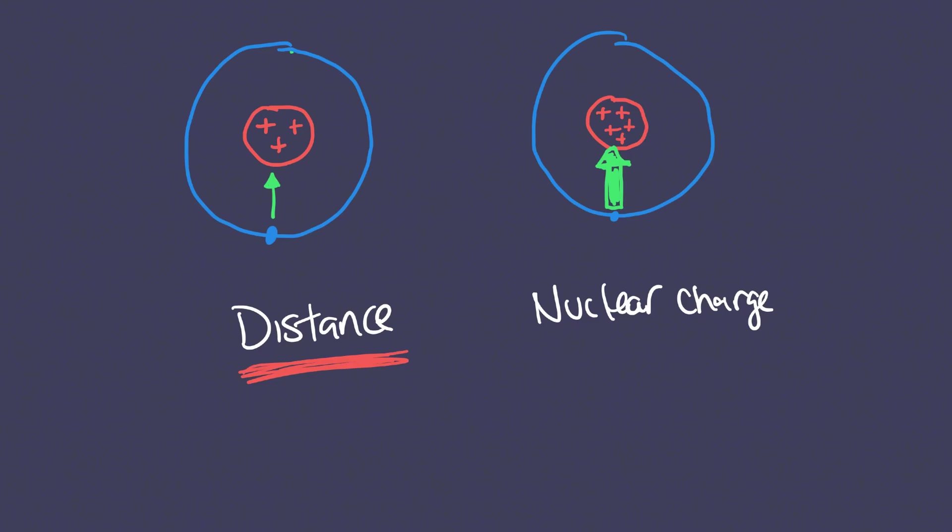So if you are comparing two different atoms where the number of protons and the distance both vary, most likely what you'd discuss is why the electrostatic attraction is different due to the fact that the distance is going to be the big key factor here.